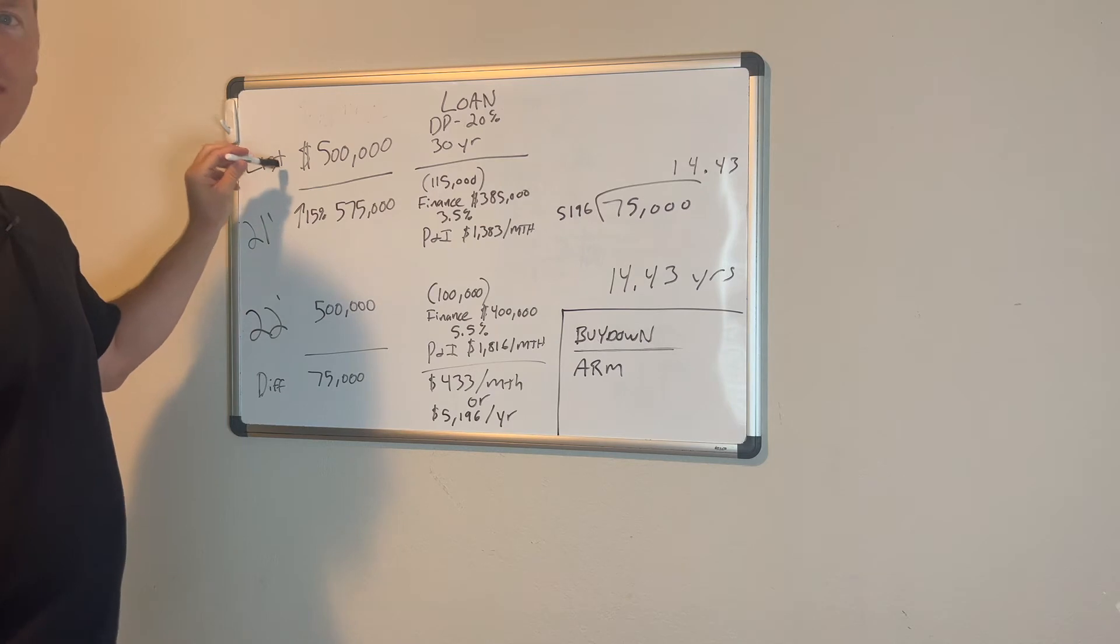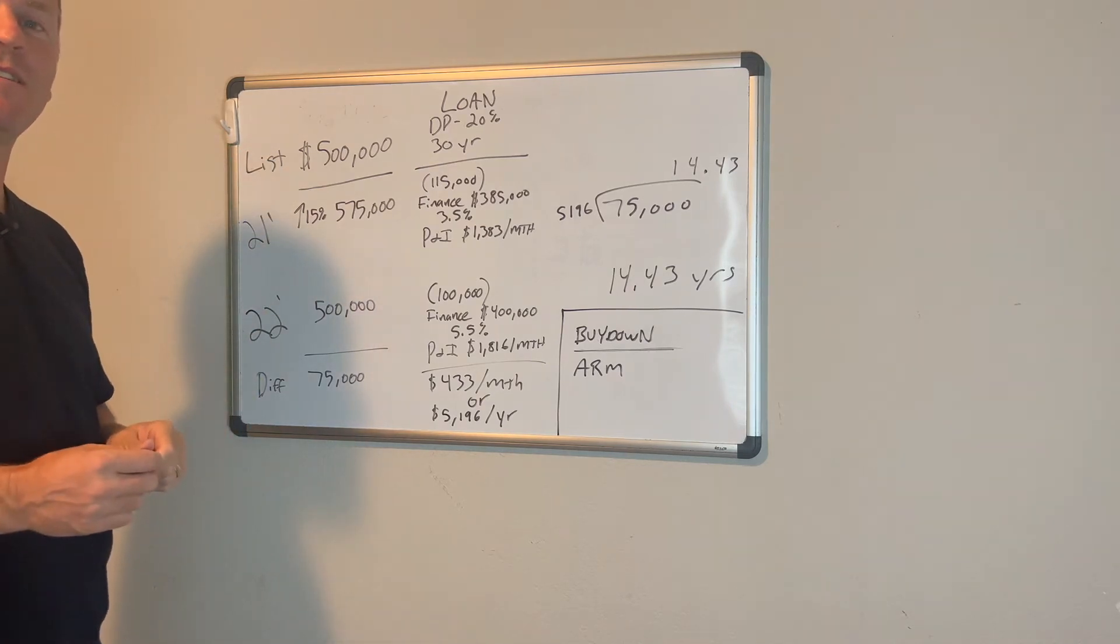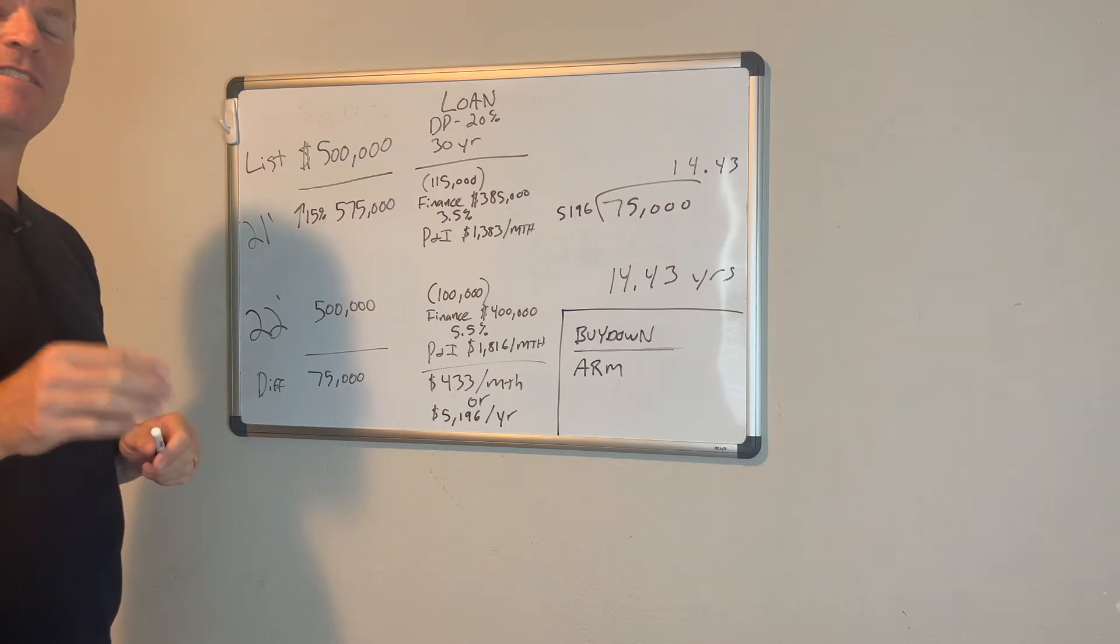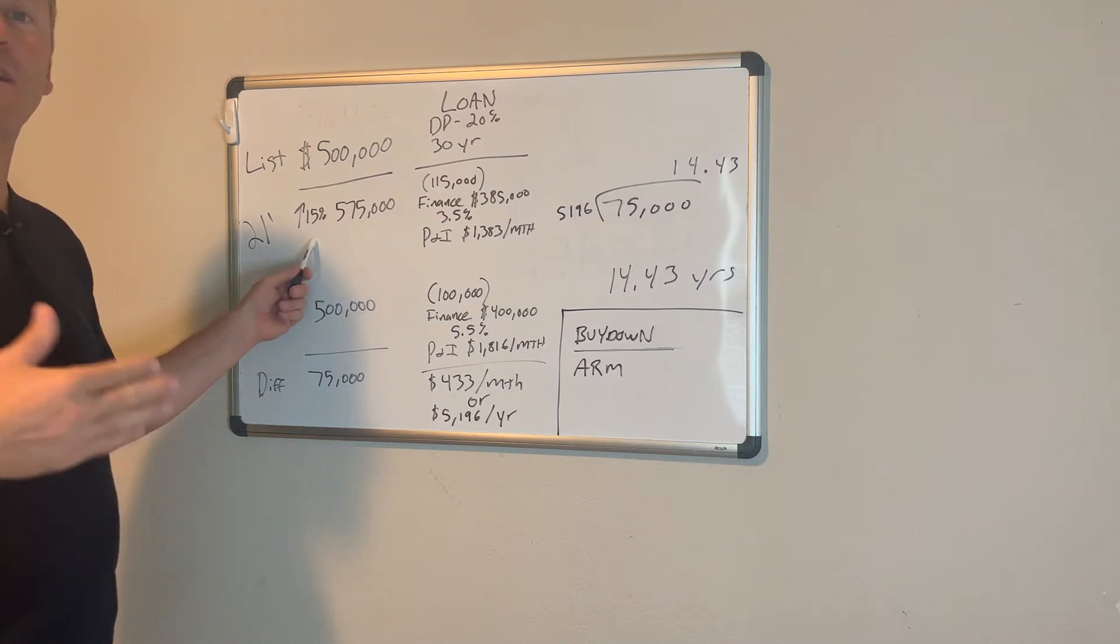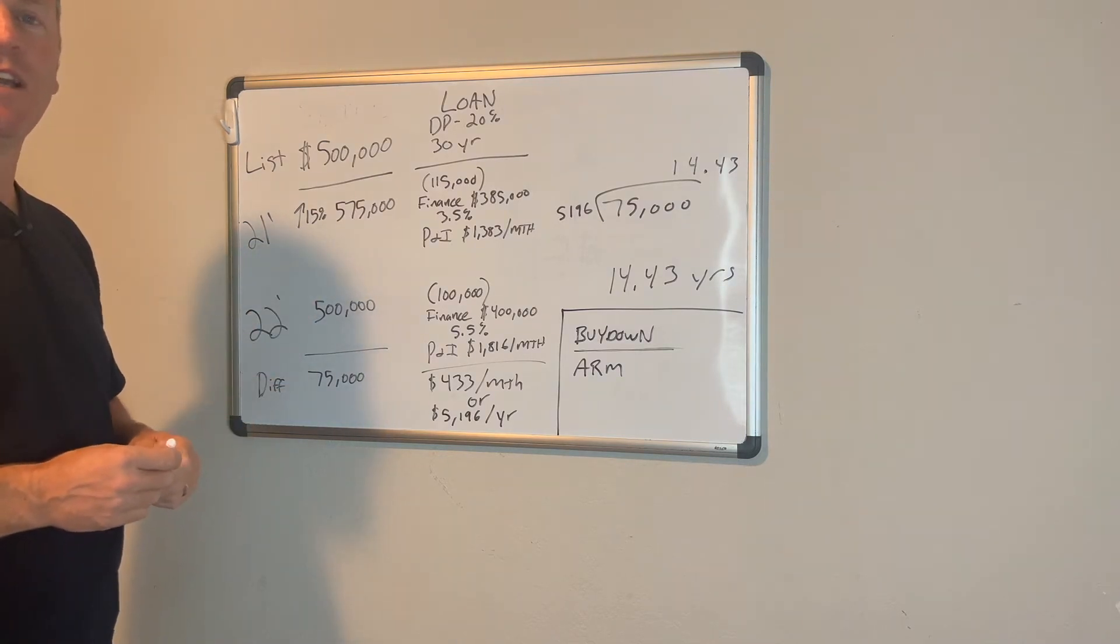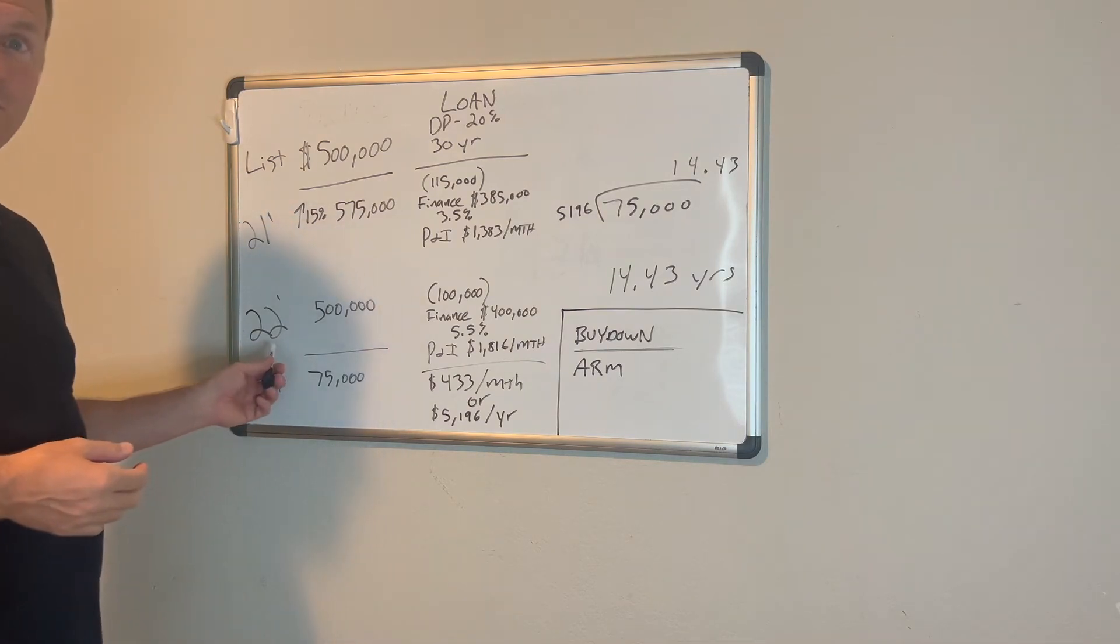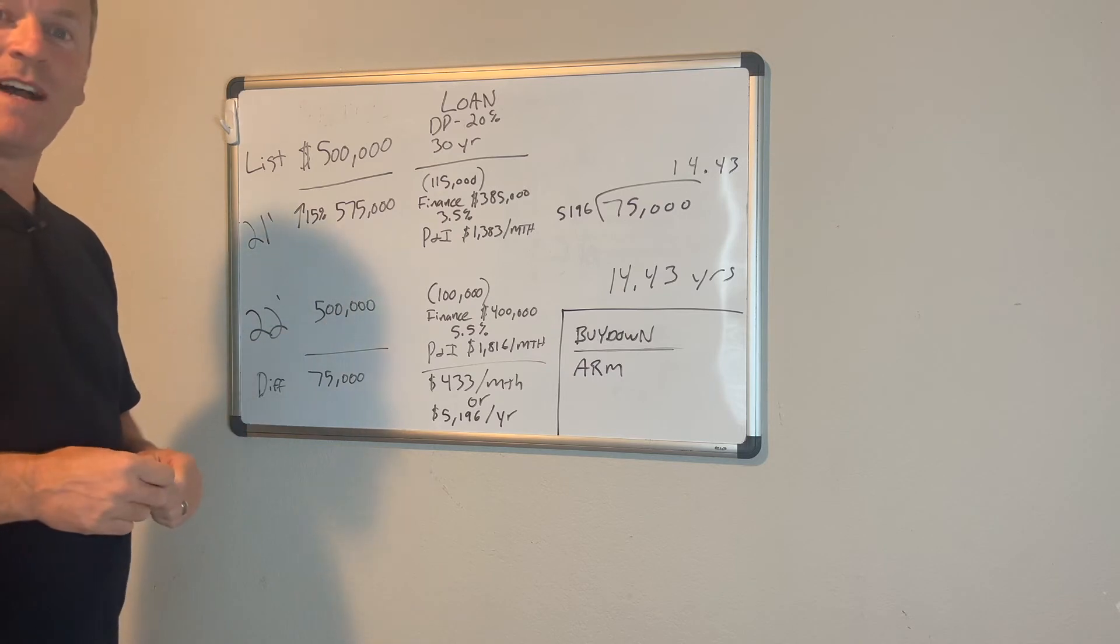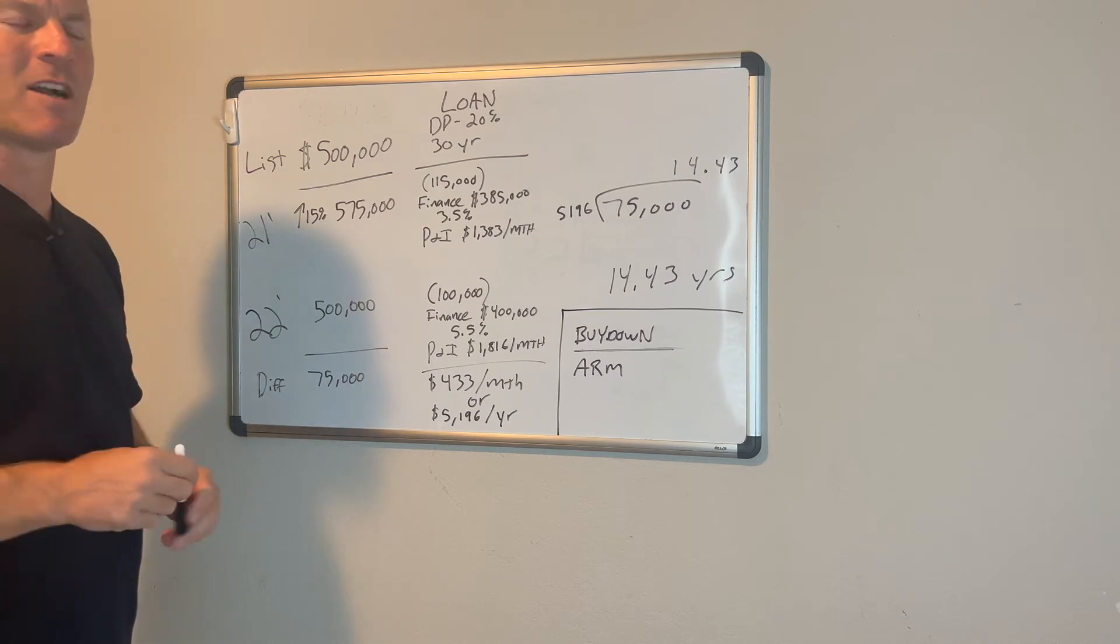So, we use the list price of $500,000. In 2021, there's a high likelihood that to get that $500,000 home, you would have had to pay a premium of 15% to win out in the multiple bid situation. In other words, your house would have been $575,000. Now, there's also a high likelihood that in 2022, you would get that $500,000 home for $500,000. So, that difference is $75,000. We'll come back and talk about that in a second.